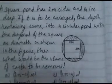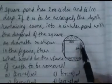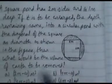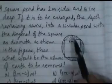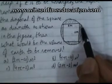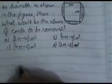A square pond has 2-meter sides and is 1 meter deep. If it is to be enlarged — depth remaining the same — into a circular pond with the diagonal as diameter, we need to find the volume of earth to be removed. We will find the area of the circle and the area of the square, subtract the square's area from the circle's area to get the shaded region, then multiply by depth to get the volume.